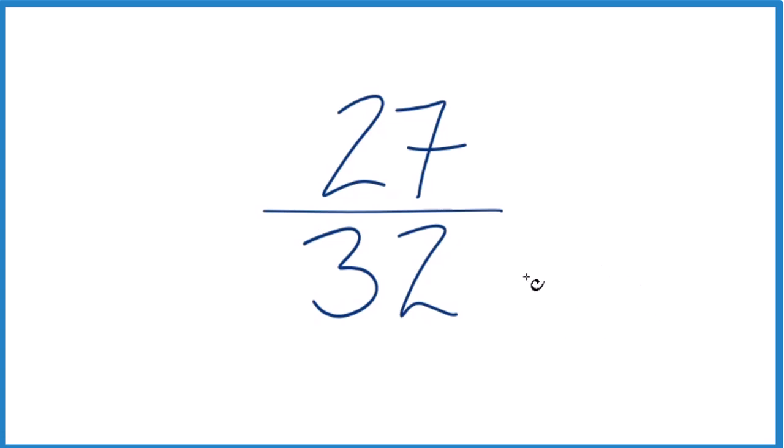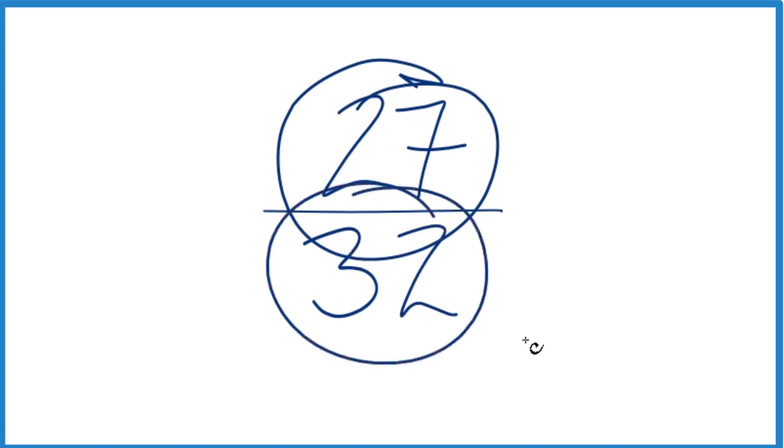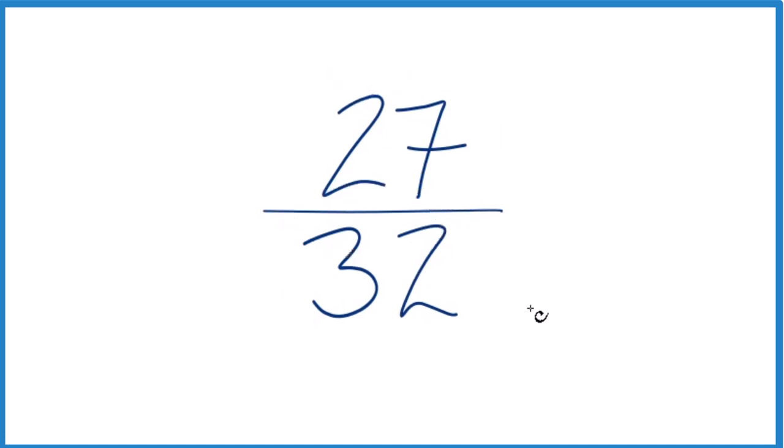To do that, we need to find a common factor, something that goes evenly into 27 and 32. The thing is, the only number that divides evenly into 27 and 32 is 1.